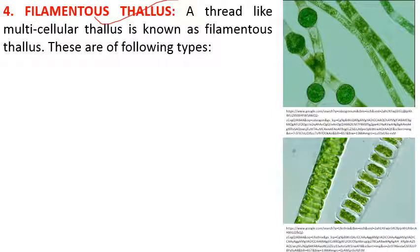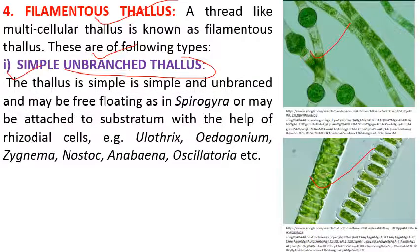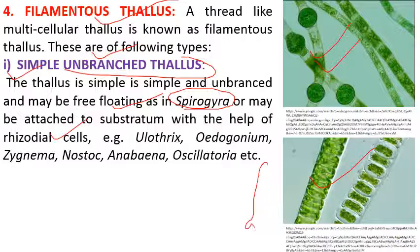Next we have filamentous thallus — thread-like, multicellular structures. Filaments may be unbranched or branched. Simple unbranched thallus has a single pipe-like structure with no branching — it may be free-floating, like Spirogyra, or attached to substratum with the help of rhizoidal cells at the base, like Oedogonium, which has a disk-like structure at the base for attachment. Examples are Ulothrix and Oedogonium, as well as Zygnema, Spirogyra, and Sladophora.